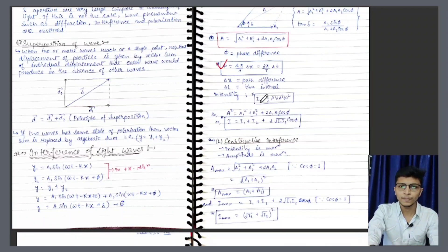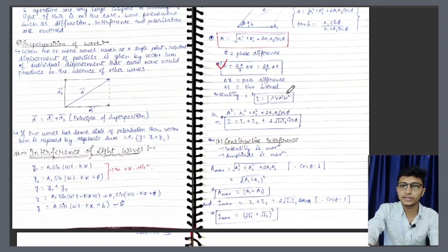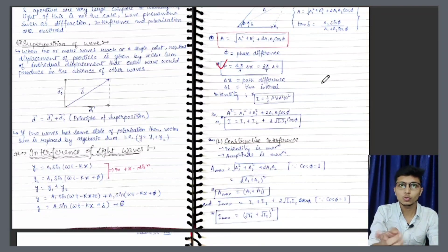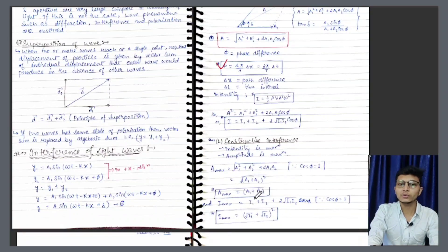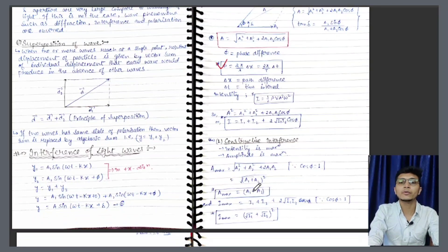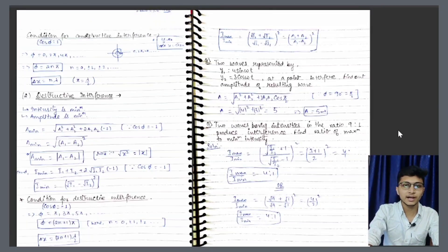Yeh kaise aaya? Yeh jo intensity hai, hum intensity ko likh sakte hain: I is proportional to a square. To hum bol sakte hain a is proportional to under root of I. To usi tarah jab a1 aur a2 ka value yahan par bitha denge, then hamare paas aisa formula aa jata hai. Aur ab dekho — amplitude to maximum a1 plus a2 aa gaya. Ab intensity mein bhi cos phi = 1 bitha do: so I will be I1 plus I2 plus 2 under root of I1 I2.